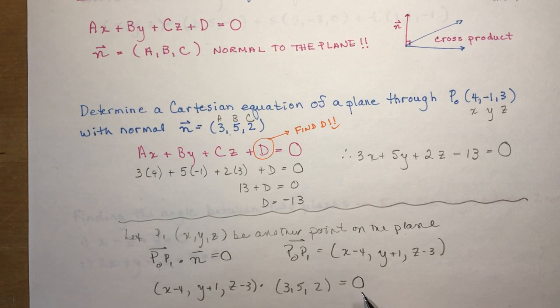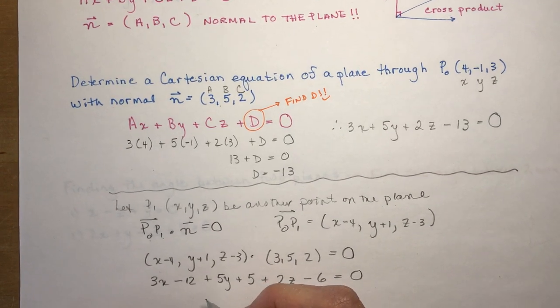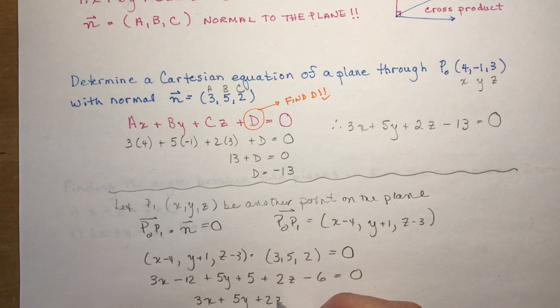I have to set that equal to 0. So now I'm going to expand, that's going to give me 3x minus 12 plus 5y plus 5 plus 2z minus 6 is equal to 0. And if you simplify that, you're going to get right back to the equation that we found above.